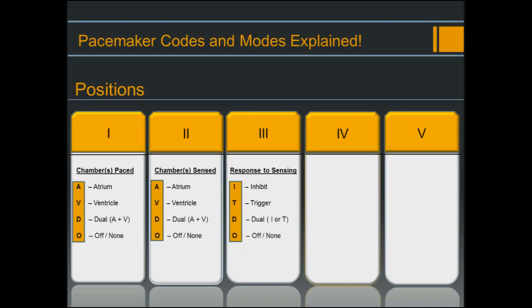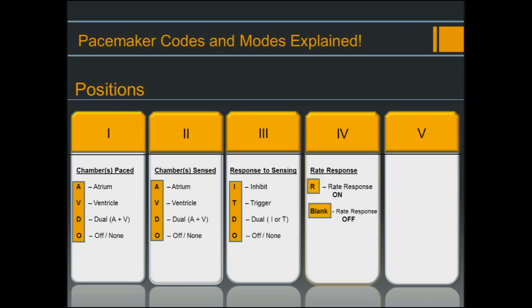The options for position three are: I for inhibit, meaning the pacemaker will pace in the given chamber unless it senses intrinsic activity, in which case it will inhibit or withhold pacing; T for trigger, meaning the pacemaker is capable of triggering an AV delay; D for dual, meaning inhibit and trigger; and O for off. You should never actually see a device with T programmed in the third position — pacemakers should only have D, I, or O. We really only talk about T to understand the concept of triggering an AV delay.